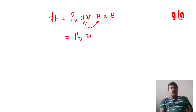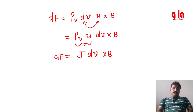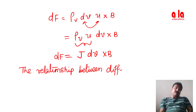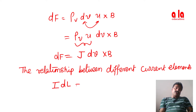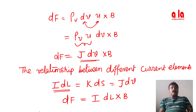Since J is equal to ρᵥ u, we can write df is equal to J dv cross B. The relationship between different current elements is: Idl is equal to Kds is equal to Jdv. Substituting Jdv with Idl, the df value becomes df is equal to Idl cross B.